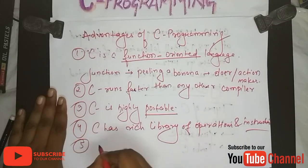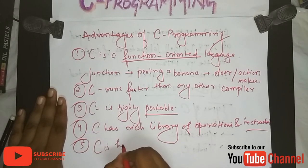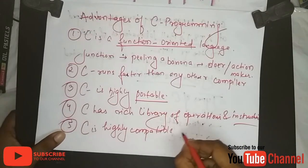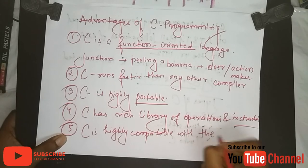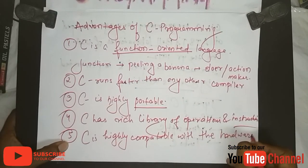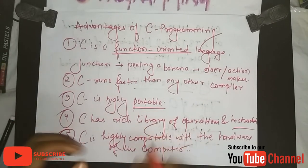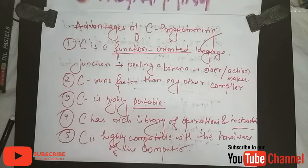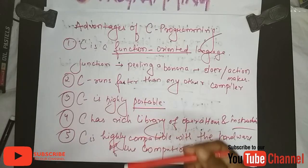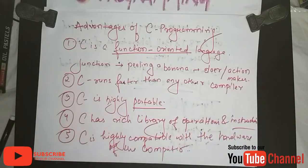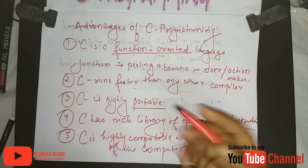The fifth advantage is C is highly compatible with the hardware of the computer. This is because many C instructions are in assembly language, which is easily understandable by the hardware. This is why all operating systems, including Windows, are programmed in C so that it can easily interact with the hardware and give it direct instructions.